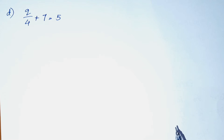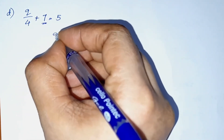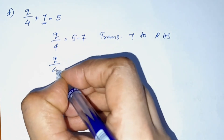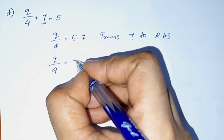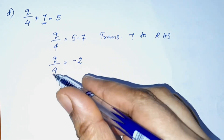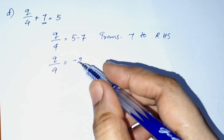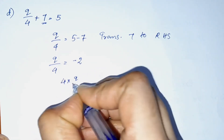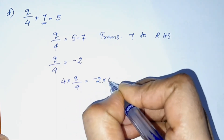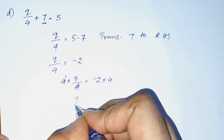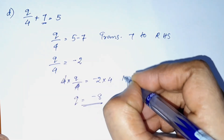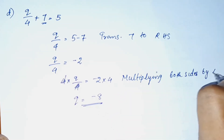Next question: q by 4 plus 7 is equal to 5. Transposing 7, q by 4 is equal to 5 minus 7, which is negative 2. Multiplying both sides by 4, q is equal to negative 2 into 4, so q is equal to negative 8. This is the answer.